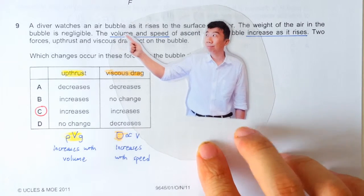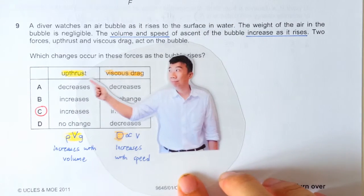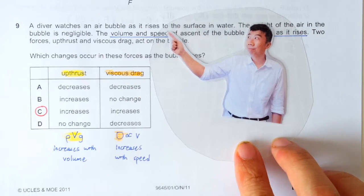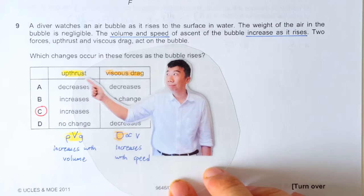A bubble experiences uptrust and viscous drag as it rises up to the water surface. We know that the uptrust is dependent on the weight of the fluid displaced.